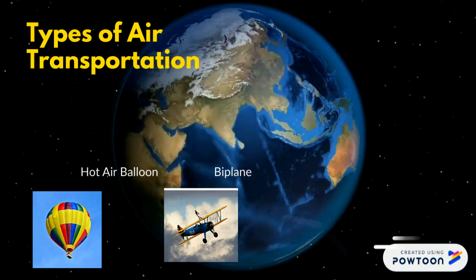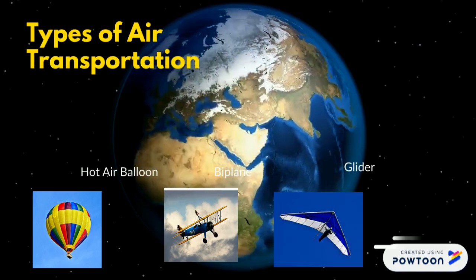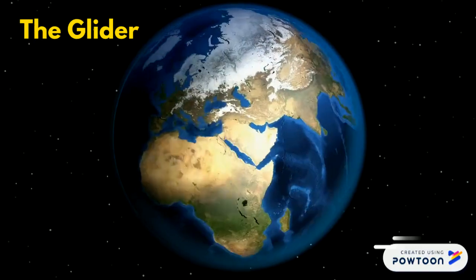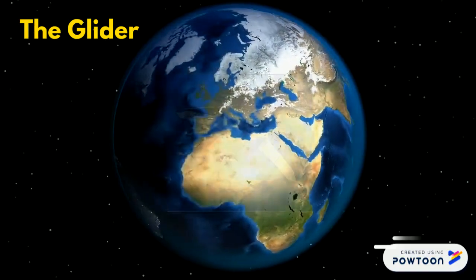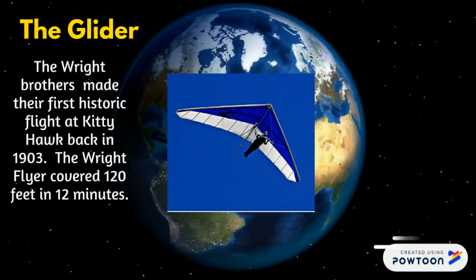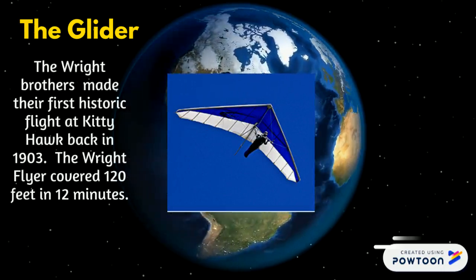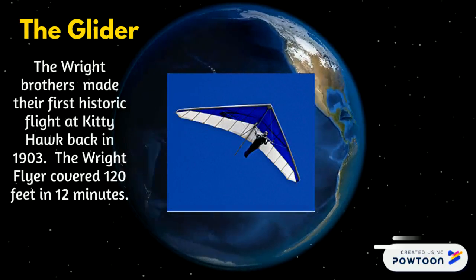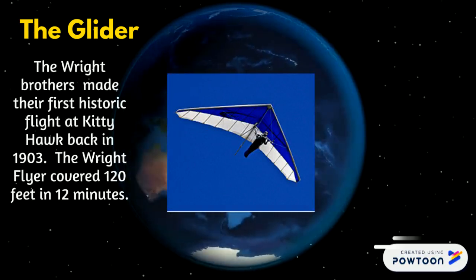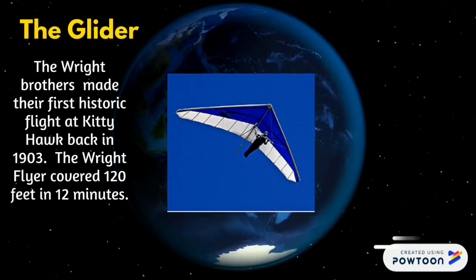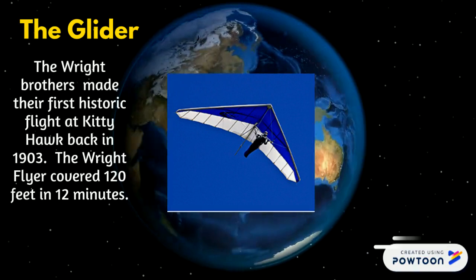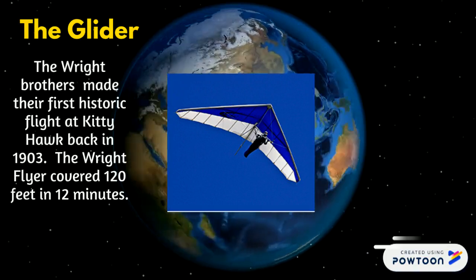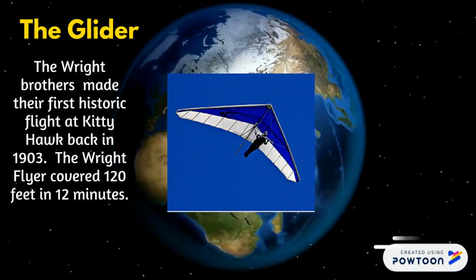And gliders. Did you know that the glider was the very first plane? The Wright brothers made their first historic flight at Kitty Hawk back in 1903. The Wright Flyer covered 120 feet in 12 minutes. Wow.